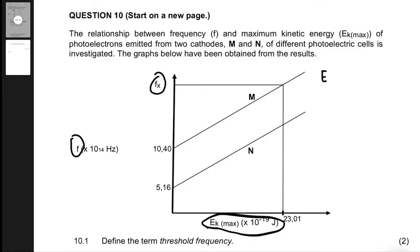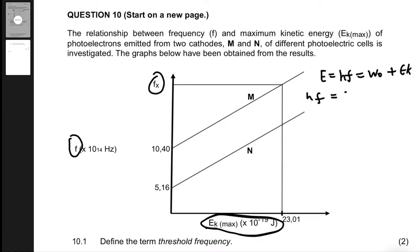From definition we know that E equals hf, or equals work function plus EK max. From this we can deduce that hf equals the work function, which is given by h multiplied by the threshold frequency, plus EK.